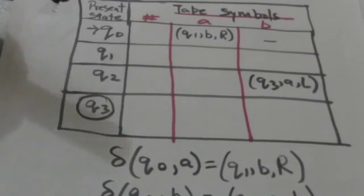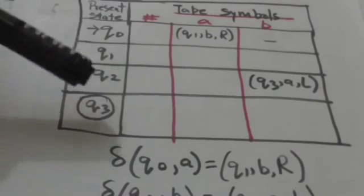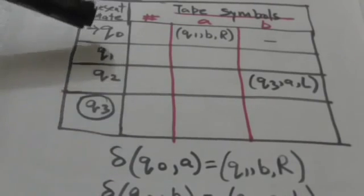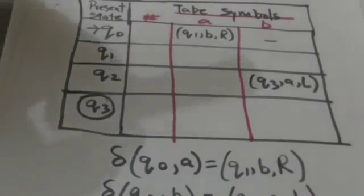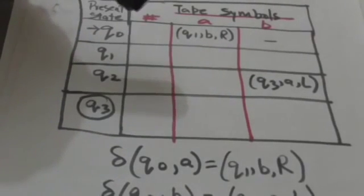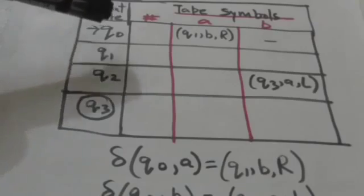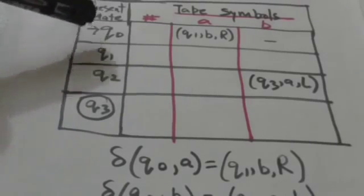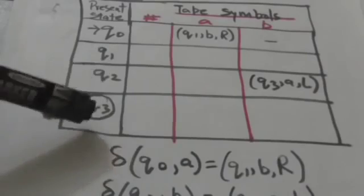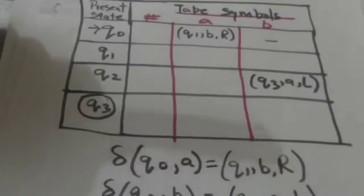A Turing machine can also be represented in tabular form. In this tabular form, the Turing machine is represented by a table where rows of the table are labeled by the states of the Turing machine and columns of the table are labeled by the tape symbols. The initial state is represented by putting an arrow before it, and final states are encircled.